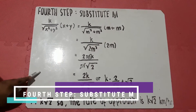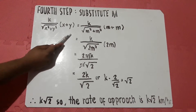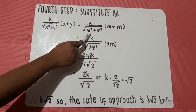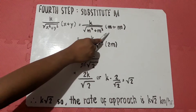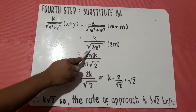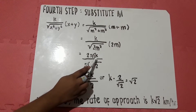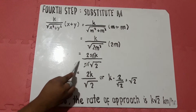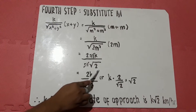Since it is stated that the trucks are M kilometers from the intersection, for the fourth step we substitute M for both x and y. So x-squared plus y-squared becomes m-squared plus m-squared, and x plus y becomes 2m. This gives us 2m-squared under the square root and 2m in the numerator, which simplifies to 2mK in the numerator. Since the square root of 2m-squared extracts m outside the radical, the remaining term under the square root is just 2.